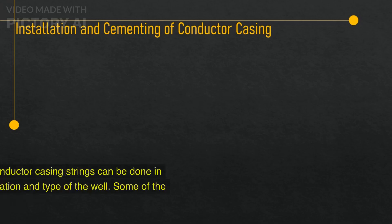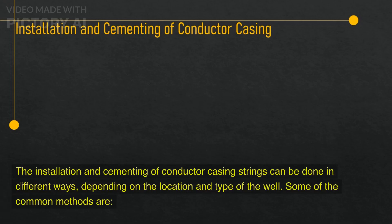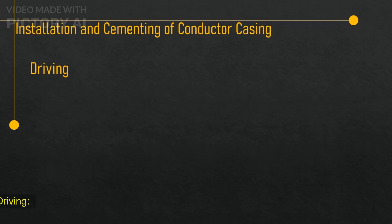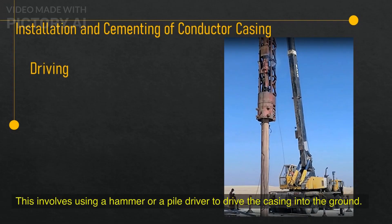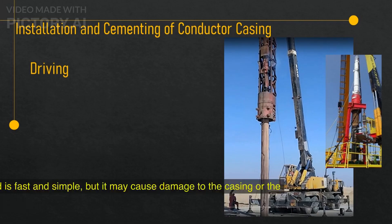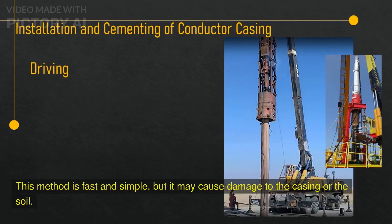The installation and cementing of conductor casing strings can be done in different ways, depending on the location and type of the well. Some of the common methods are: Driving — this involves using a hammer or a pile driver to drive the casing into the ground. This method is fast and simple, but it may cause damage to the casing or the soil.